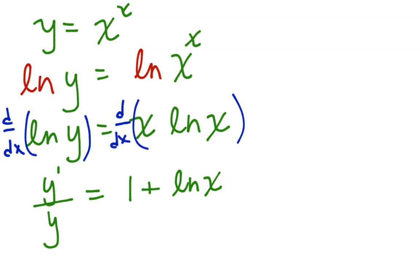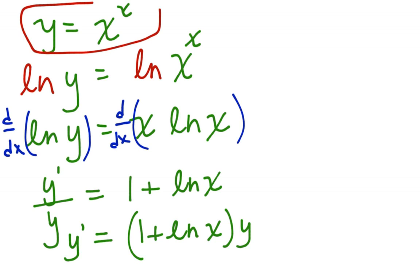So, I want to know the derivative, y prime. So, I'm going to solve for y prime. 1 plus ln x, multiply both sides by y. Well, what did we say y was equal to? y is equal to x to the x. So, y prime is now going to equal 1 plus ln x times x to the x.